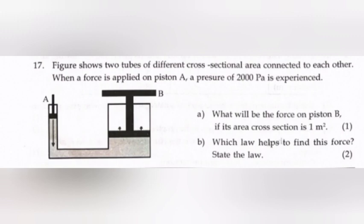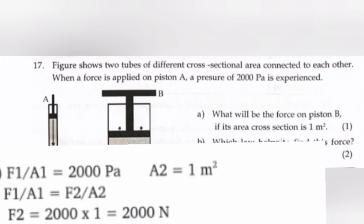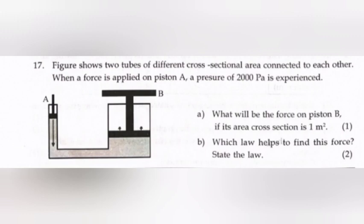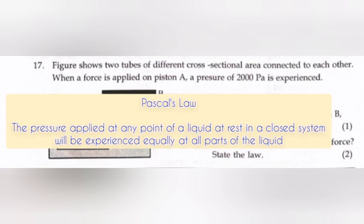Question 17: Figure shows two tubes of different cross-sectional area connected to each other. When a force is applied on piston A, a pressure of 2000 pascal is experienced. (a) What will be the force on piston B if its cross-section is 1 m²? Answer: F₁/A₁ = 2000 pascal, A₂ = 1 m². F₁/A₁ = F₂/A₂, F₂ = 2000 × 1 = 2000 N. (b) Which law helps to find this force? State the law. Answer: Pascal's law. The pressure applied at any point of a liquid at rest in a closed system will be experienced equally at all parts of the liquid.